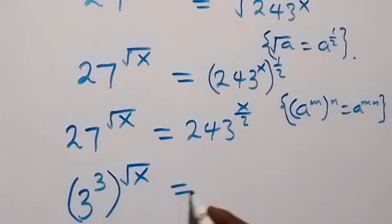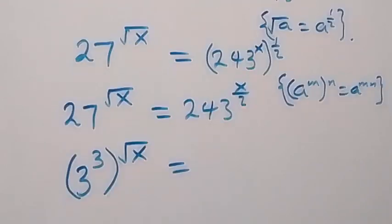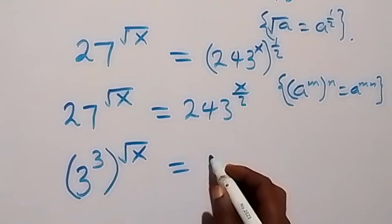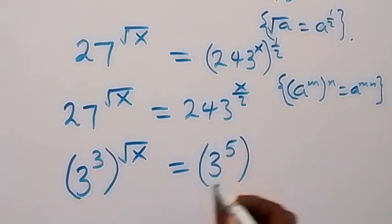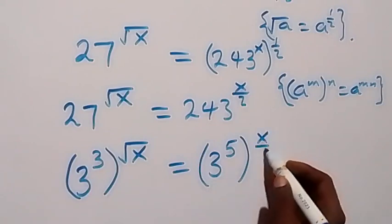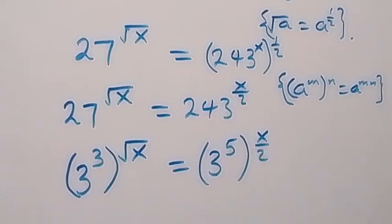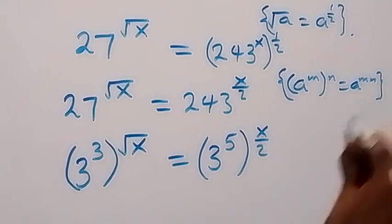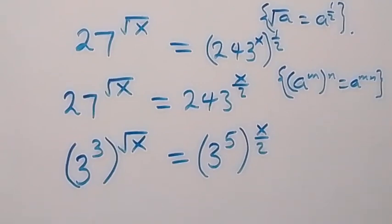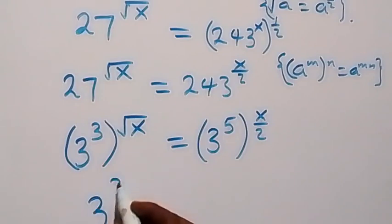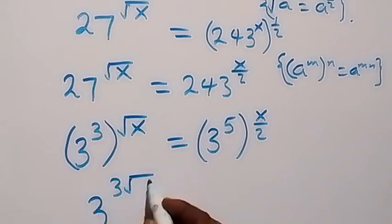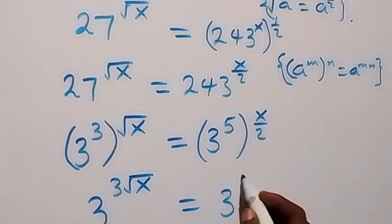And 243 can also be written as 3 raised to power 5 — that is, 3 multiplied by itself 5 times — then raised to power x over 2. Applying the law of indices and multiplying the powers, this becomes 3 raised to power 3 root x, now equals to 3 raised to power 5x over 2.